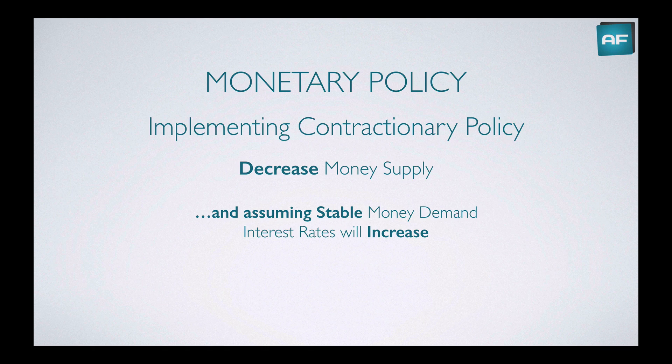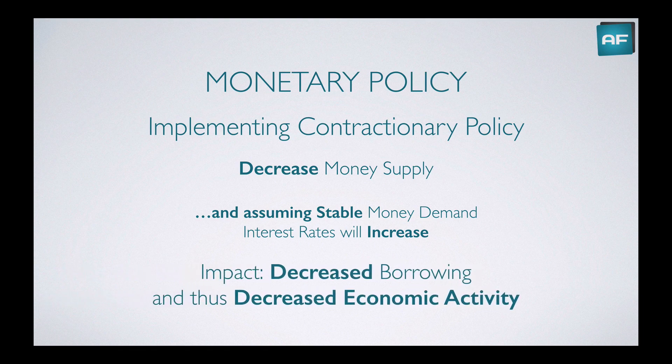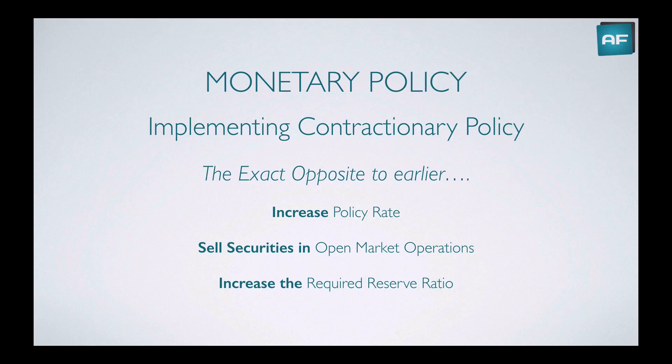So how do we implement contractionary monetary policy? This is just the opposite. We would decrease the money supply and, assuming stable money demand, interest rates would increase. This would decrease borrowing — since borrowing is now more expensive — and decrease economic activity. Implementing it is the exact opposite to expansionary: increase the policy rate, sell securities in open market operations, or increase the required reserve ratio for banks.